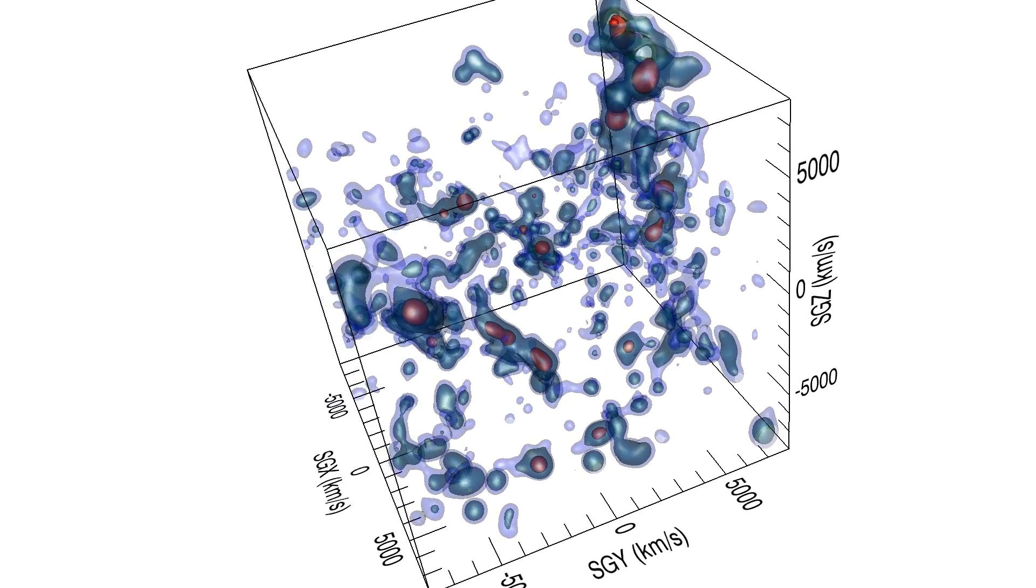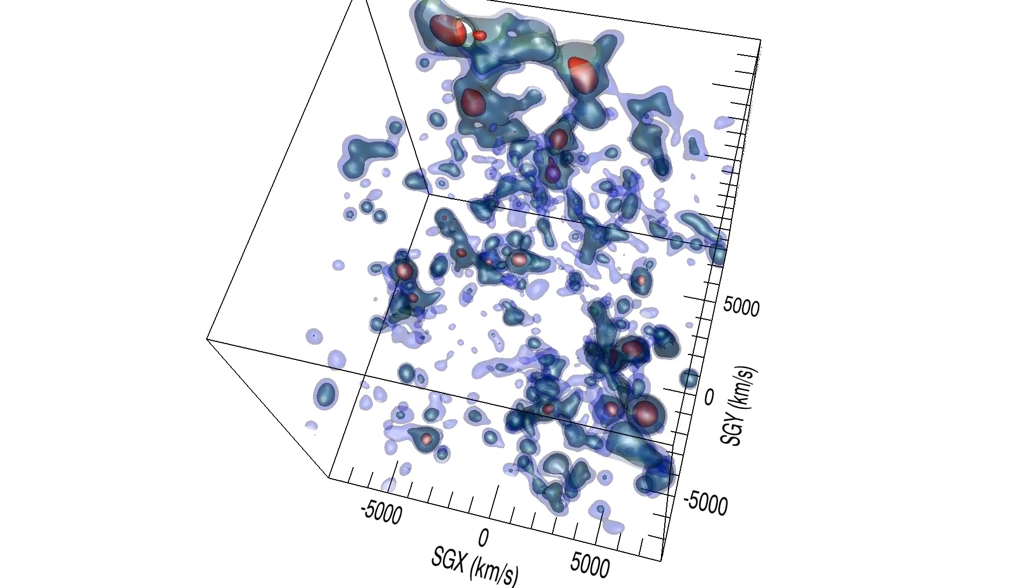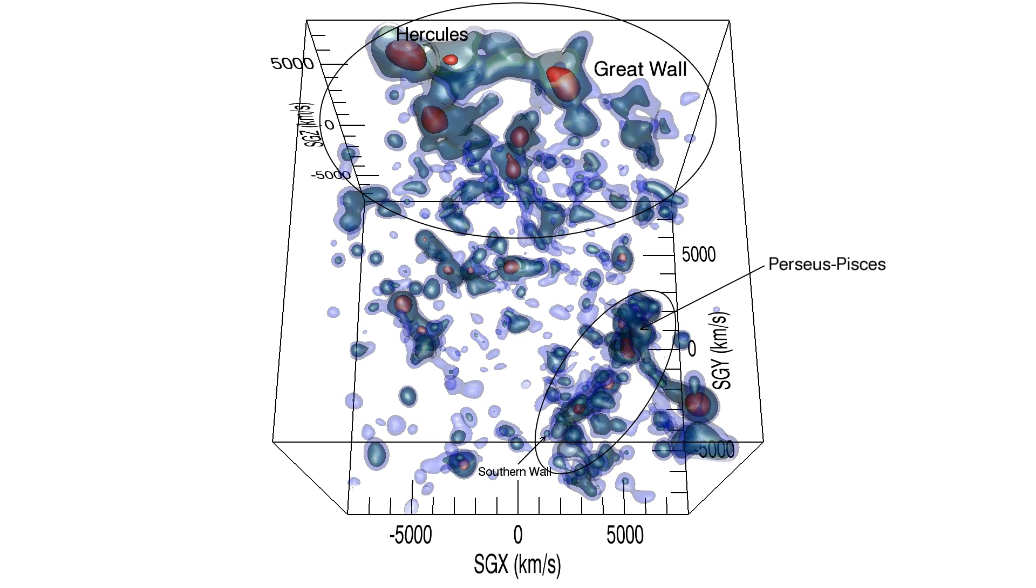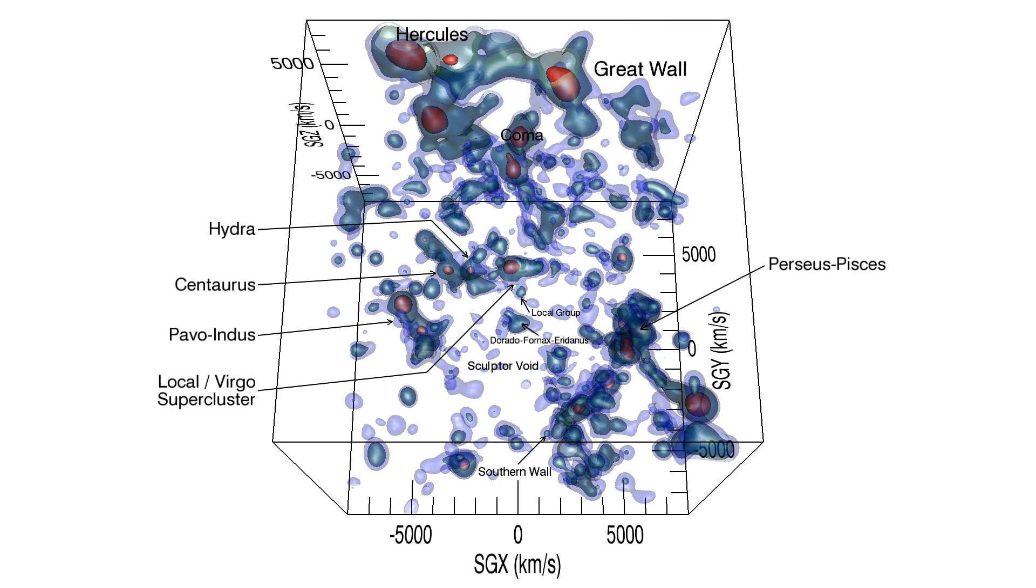A rotation takes us close to a polar view. We see the importance of the Great Wall and the Hercules Cluster region within it. The Percy Species Filament is important and we see its connection with the Saffern Wall. The local subacluster is not so important.